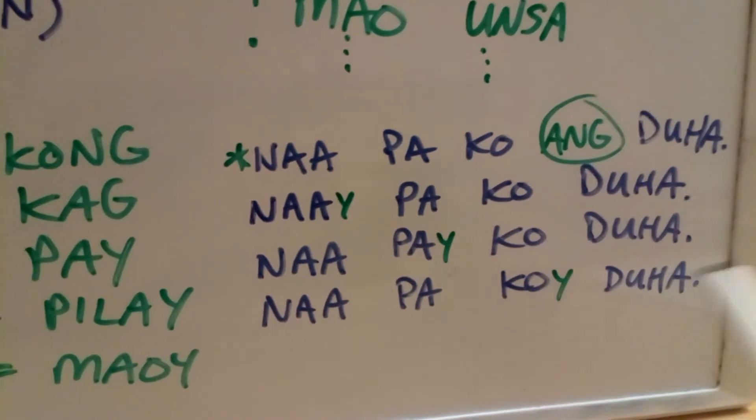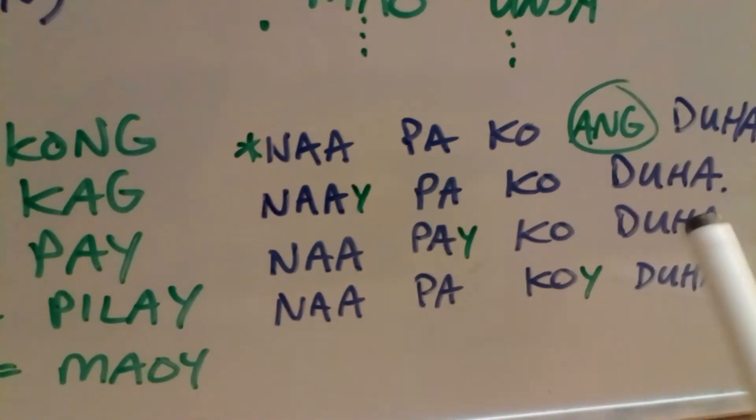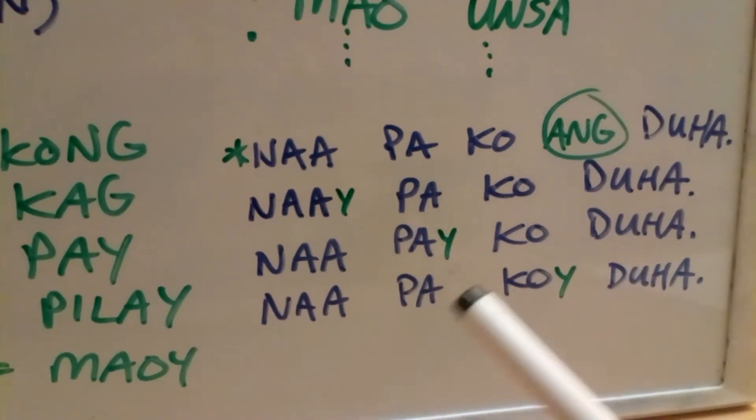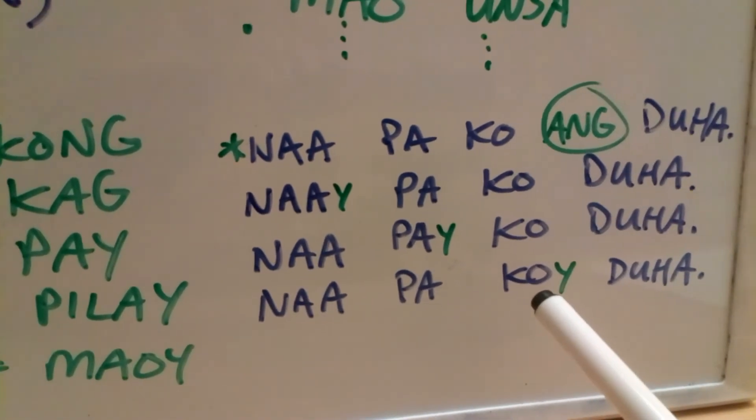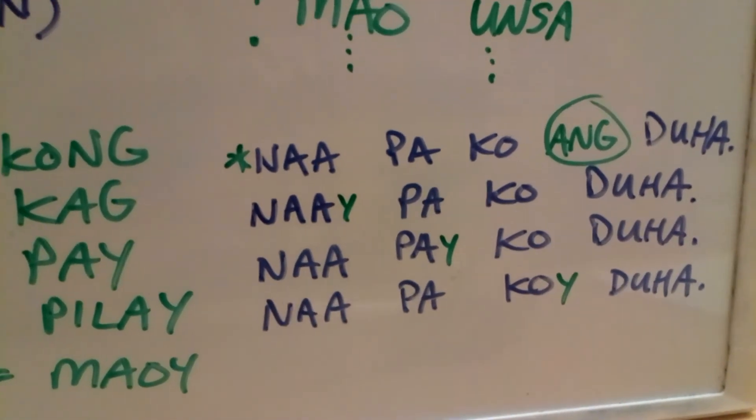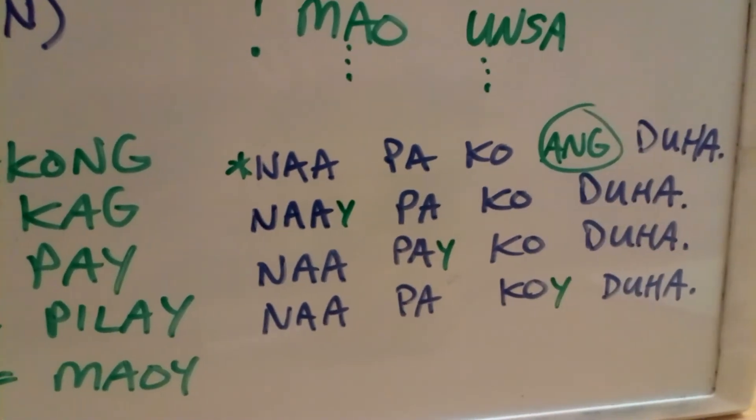Like there exists an absolute focus marker somewhere. And in this case, we are talking about the duha. The two. Two of what? We have two of what? And since we remain in the absolute focus, we have to use the absolute case pronoun, ko, which is the short form for ako.